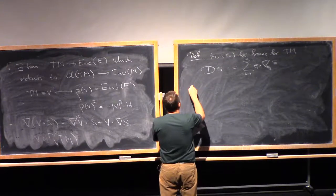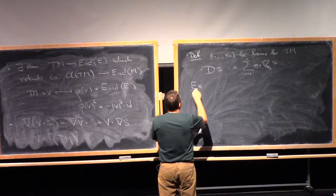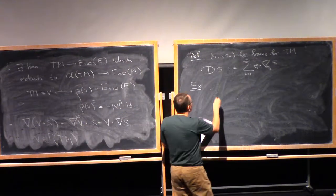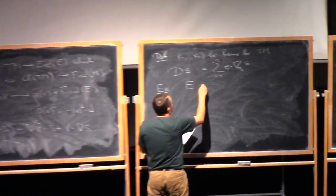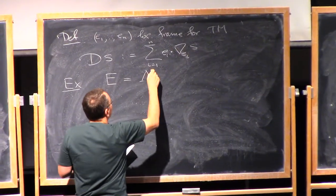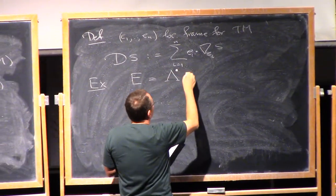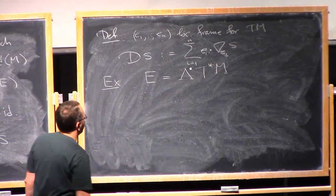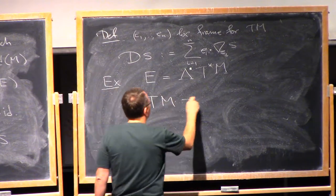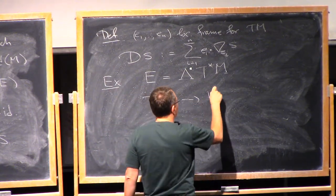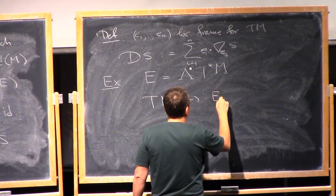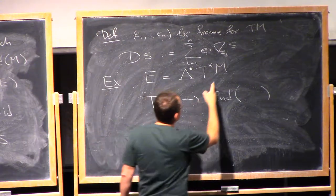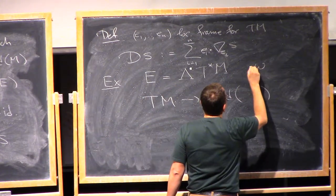Now, let me give you one example of this. We could take E to be the exterior power of the cotangent bundle to M, and I have a map from TM into endomorphism of this bundle. So if I take a one form, so not necessarily a one form, just a differential form of any degree